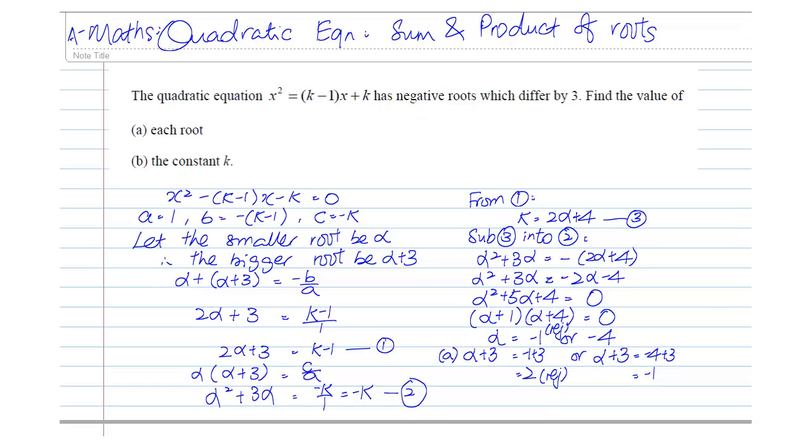To find out the second part, which is the value of K. What we need to do is go to equation number 3. And, we're going to substitute the value of alpha, which is negative 4. And, that will give us the value of K to be negative 4.